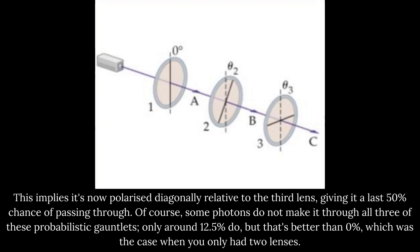Of course, some photons do not make it through all three of these probabilistic gauntlets. Only around 12.5% do, but that's better than 0%, which was the case when you only had two lenses.